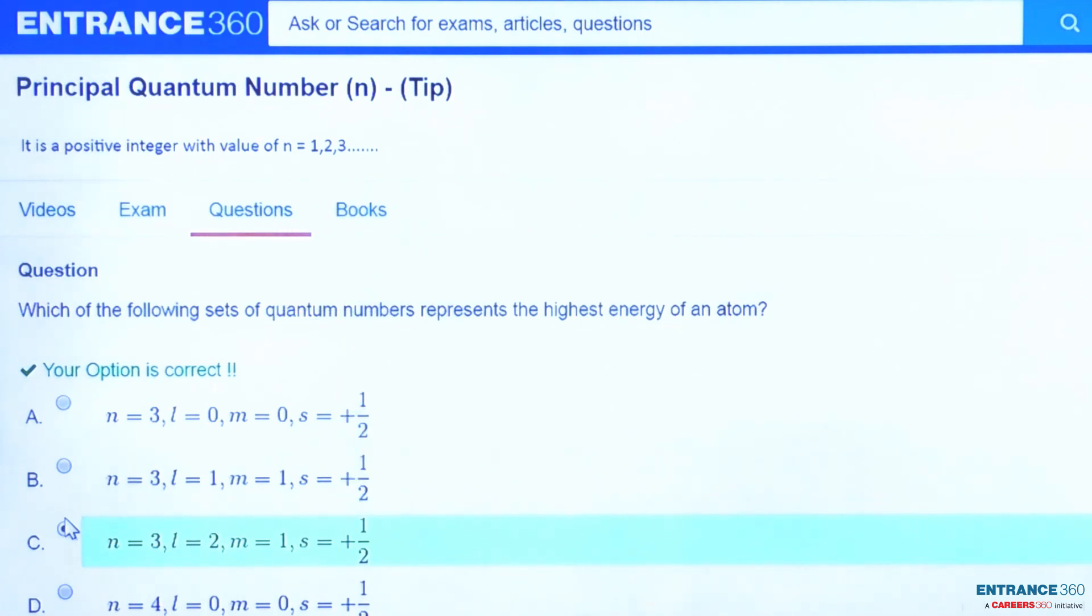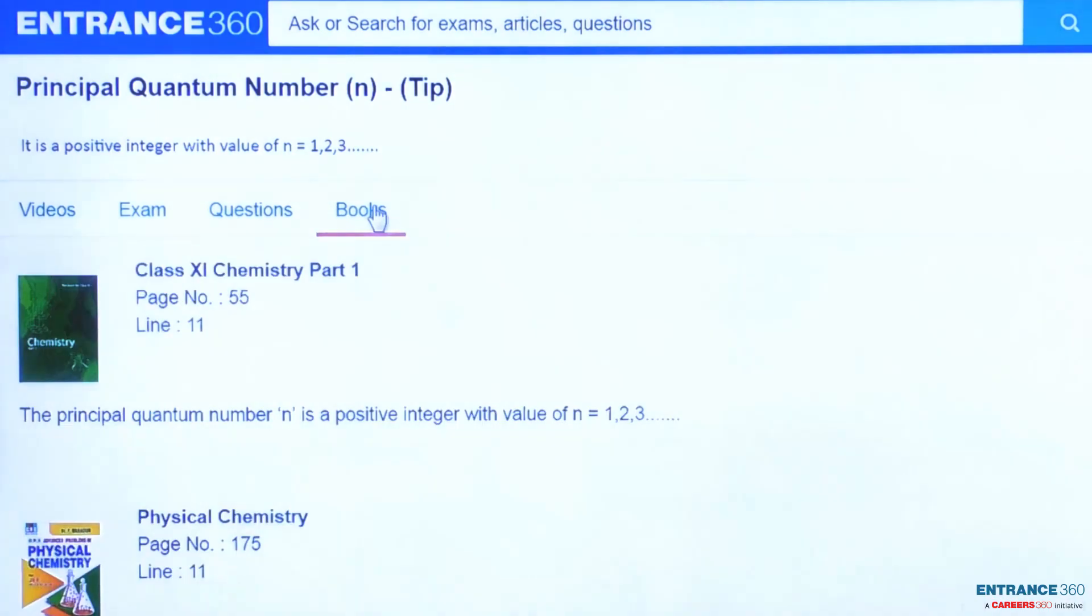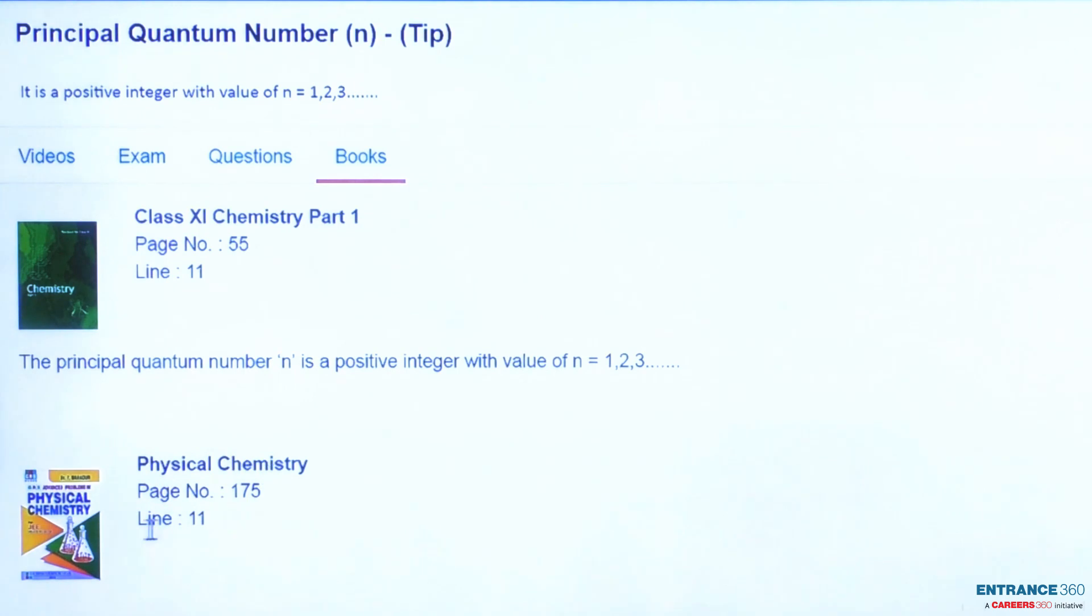For further clarification of the concept, we can see the reference video here which is around 2 to 3 minutes. Also we can refer to books like Chemistry Part One of Class 11th, and this concept is on page number 55 in line number 11. Also there is a good book which is Physical Chemistry by P. Bahadur, and this concept is on page number 175 in line number 11. So thank you students.